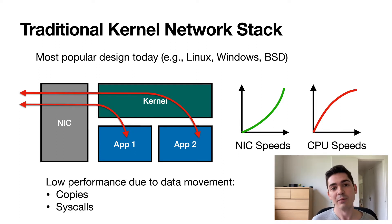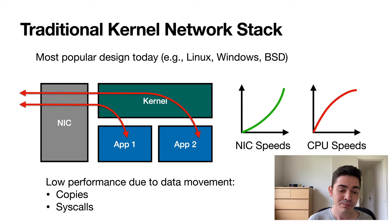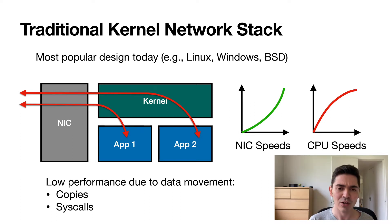The reason the kernel performs poorly is that it has to introduce overhead due to data movement. It needs to copy data between kernel space and user space, and it also has overhead due to system calls.